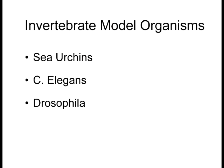Sea urchins, C. elegans, and Drosophila are three invertebrate model organisms used for developmental biology. Over the next few weeks we'll go in-depth into the advantages and disadvantages of each. C. elegans was one of the first organisms to have its entire genome sequenced, and we learned quite a bit from that. Sea urchins have radial holoblastic cleavage; C. elegans, similar to us, has rotational holoblastic cleavage; and Drosophila is syncytial meroblastic.